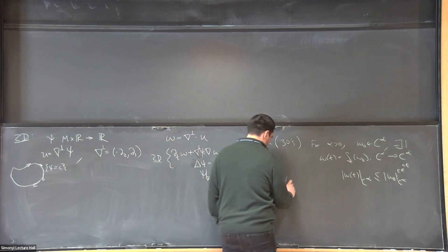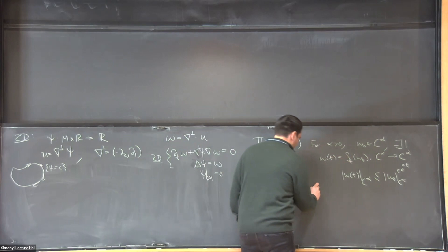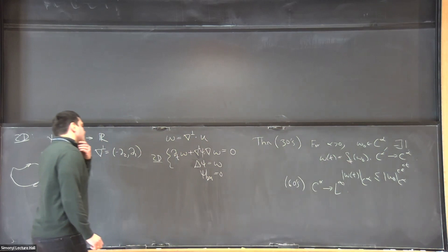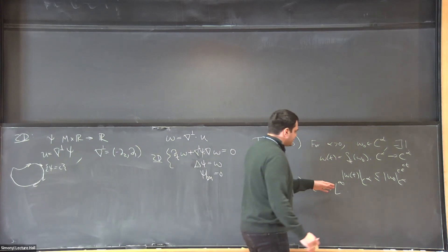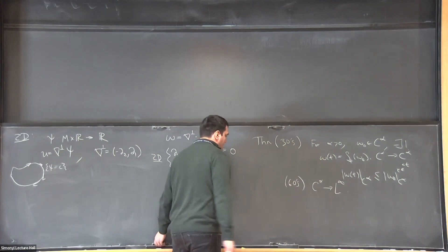In the 60s, Yudovich extended this type of existence statement to a type of weak solution where essentially you can just replace C^α with L^∞. You can just say bounded vorticity and that propagates for all time. The advantage of L^∞ in this statement is that the bounds are uniform since the vorticity is just transported. Its maximum can never increase or minimum. So in this space, you could hope to have some semblance of an asymptotic picture.